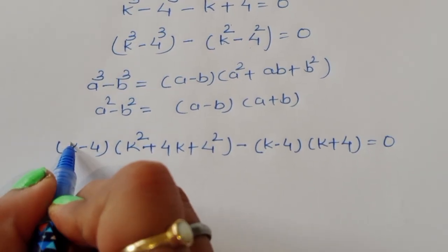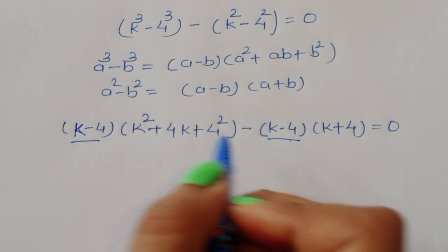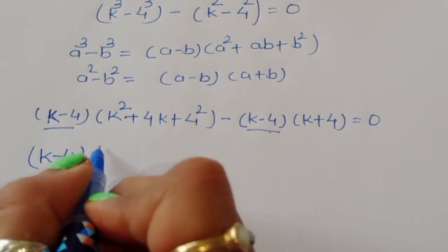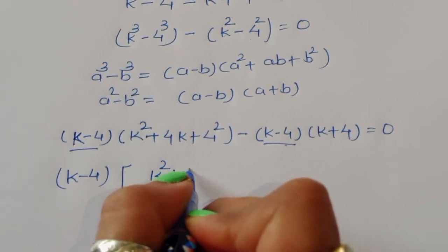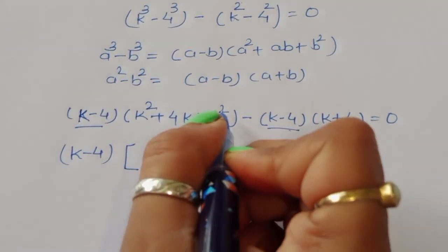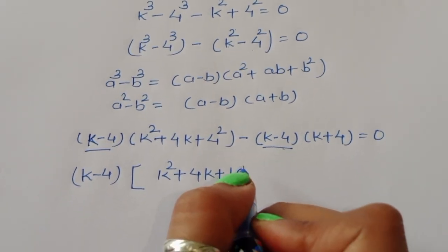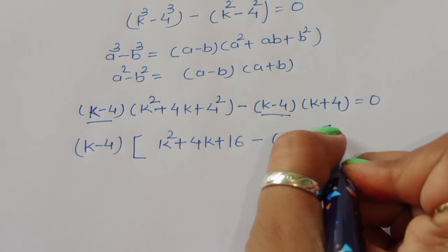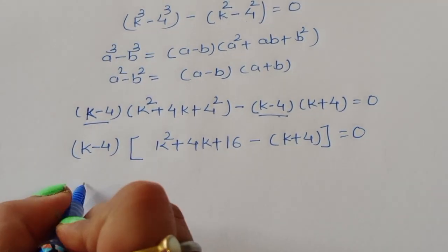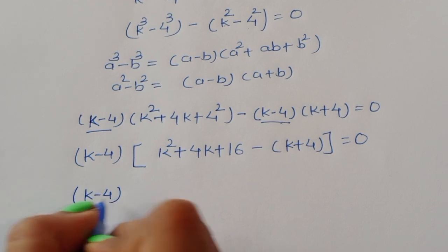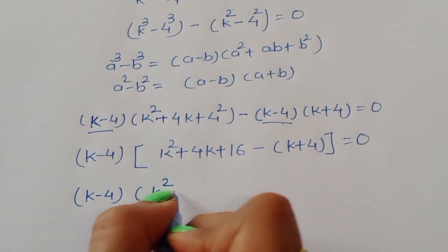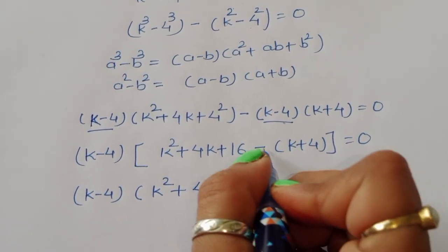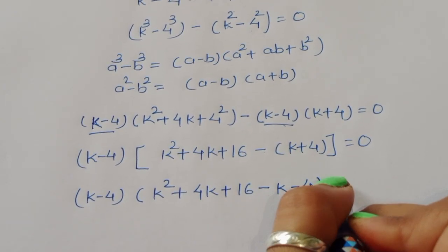We take (k minus 4) as a common factor from both terms. After factoring out (k minus 4), the remaining expression is k squared plus 4k plus 16 minus (k plus 4) equals 0, giving us (k minus 4)(k squared plus 4k plus 16 minus k minus 4) equals 0.